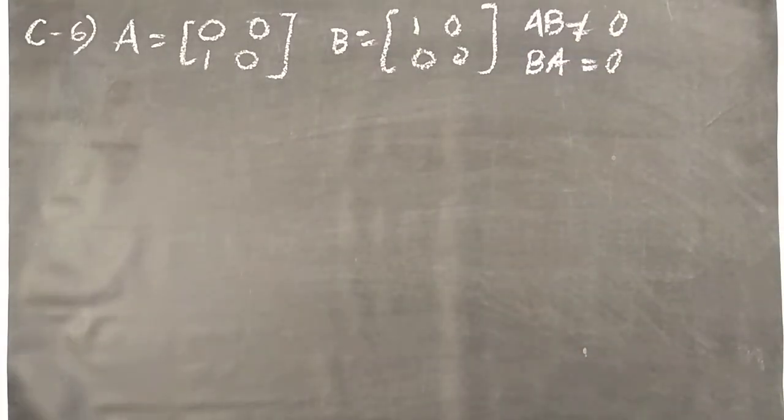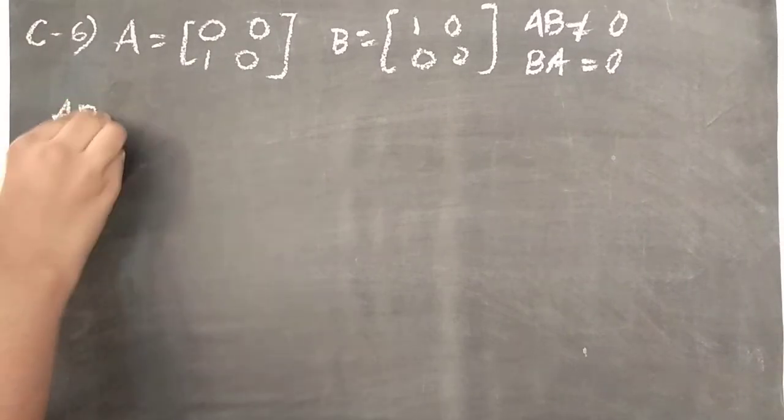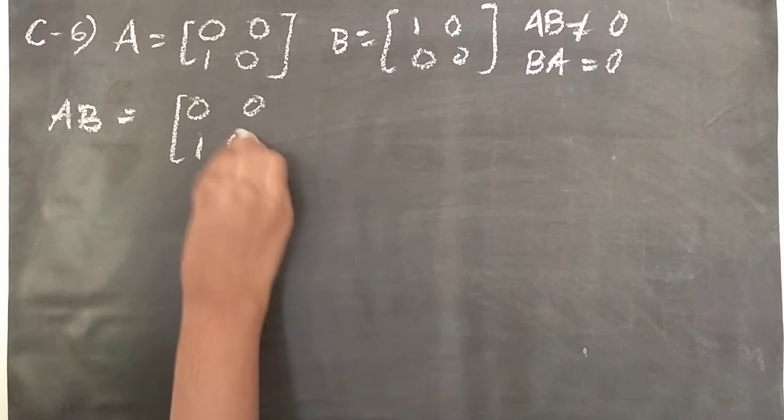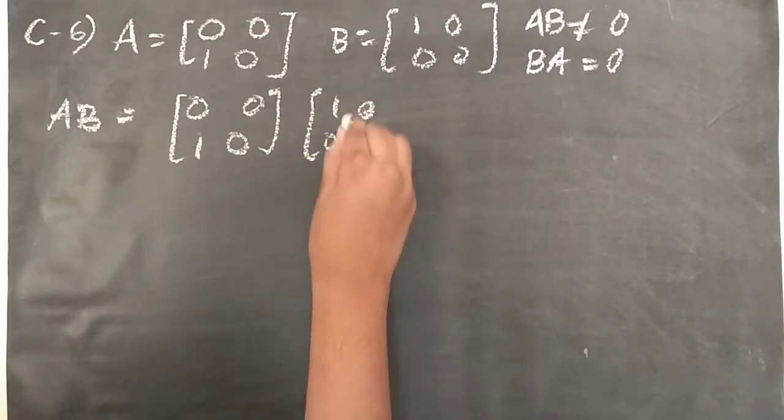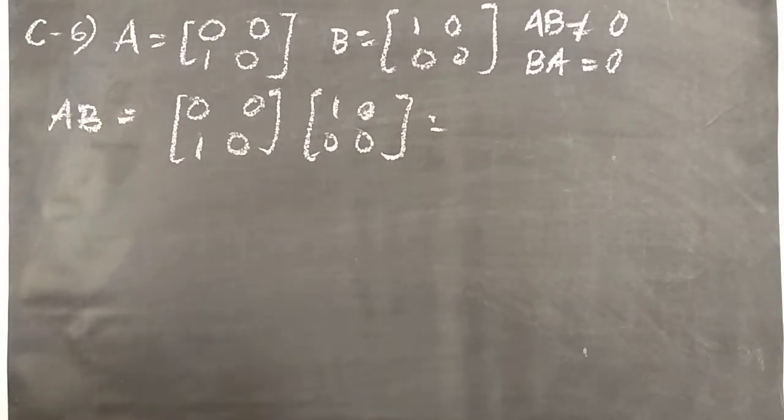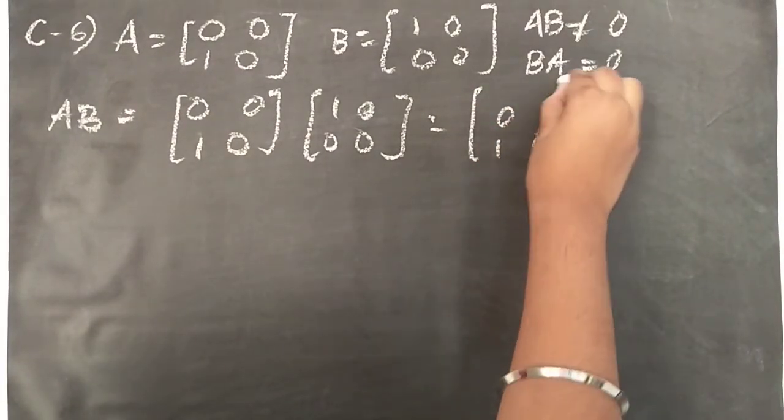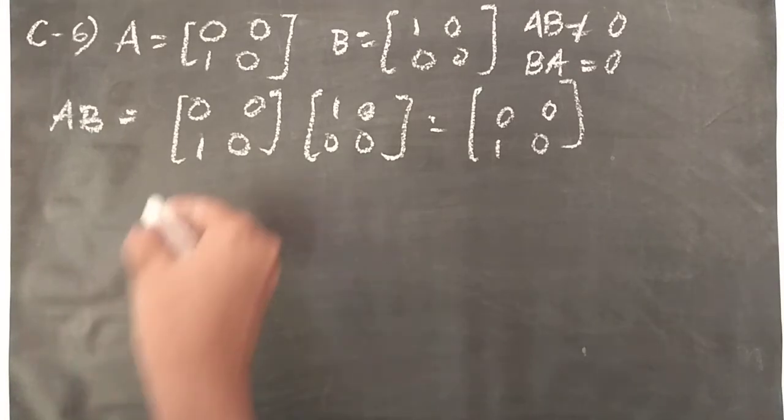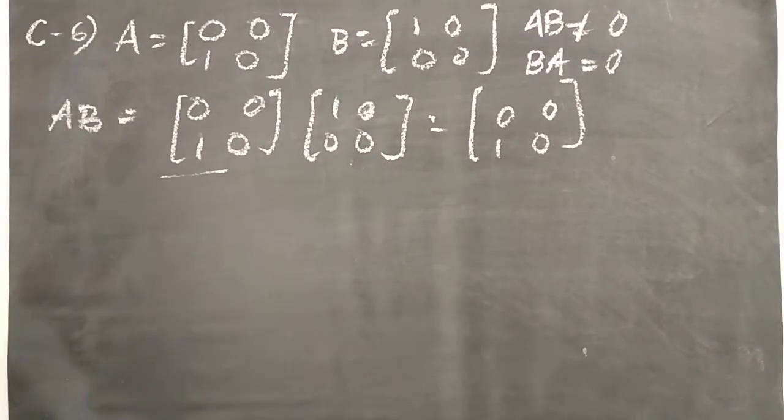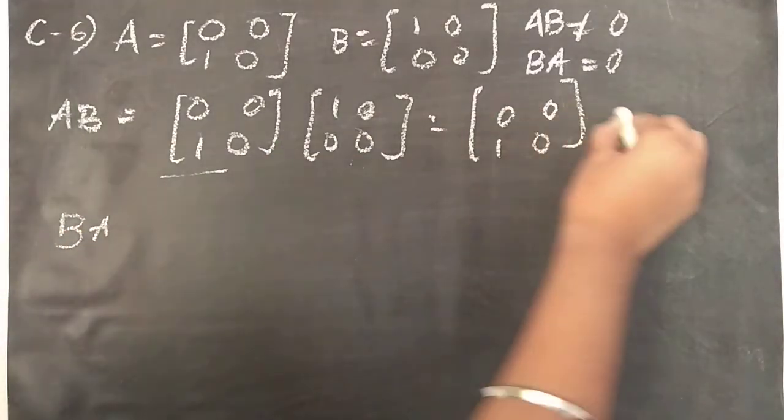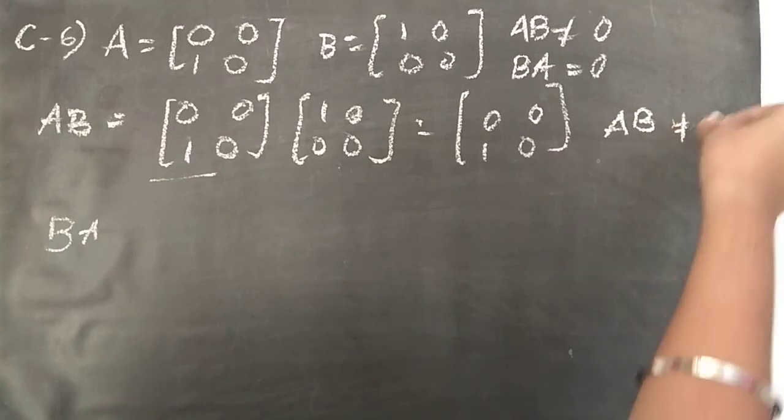So AB means 0, 0, 1, 0 into 1, 0, 0, 0. So when you multiply this with this kind of matrix, it is going to be 0, 0, 1, 0. But AB is not equal to 0, hence proved.